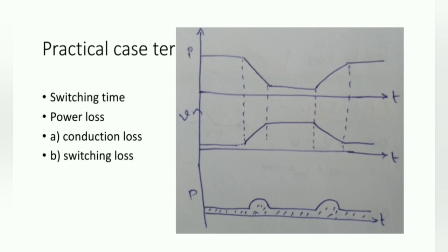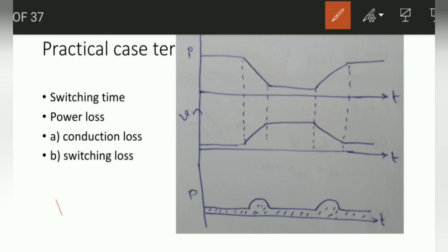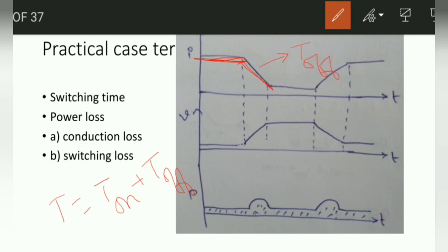Coming to the practical terms, switching time is the time taken to turn ON and turn OFF. For the practical case, switching time T = T_on + T_off. You can observe in the diagram that T_on is the time during the on transition period and T_off is the time during the off transition period; combining both gives the total switching time.